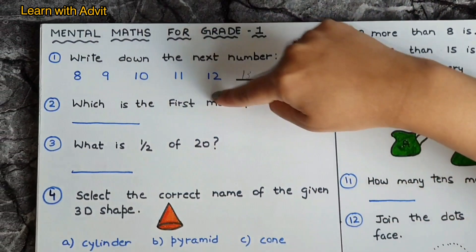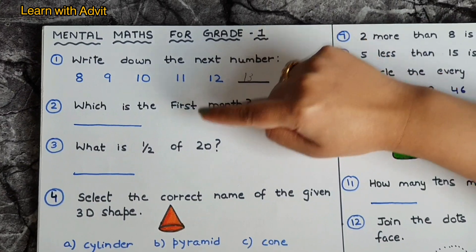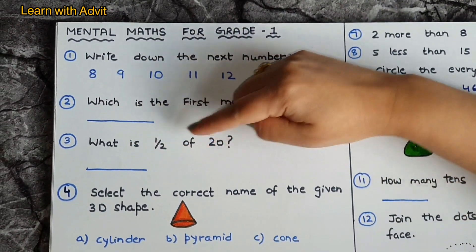Which is the first month? January, yeah, you can write it down later. What is the half of twenty? Ten, very good.